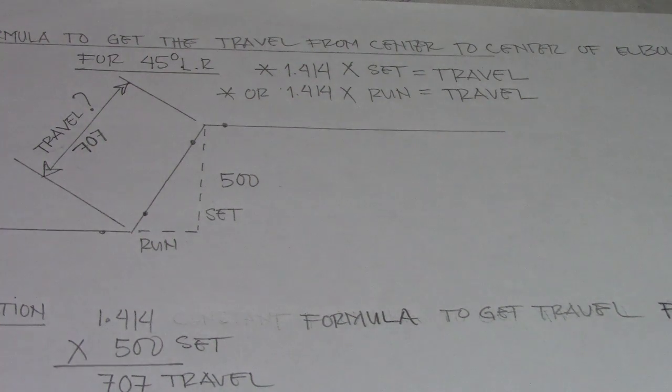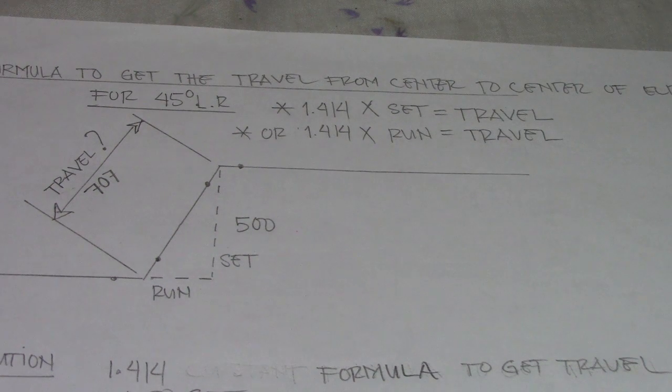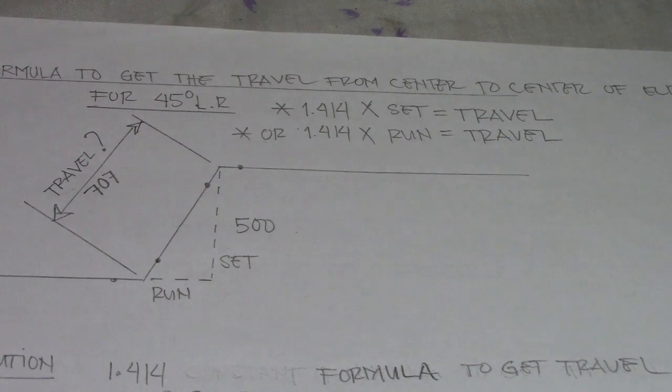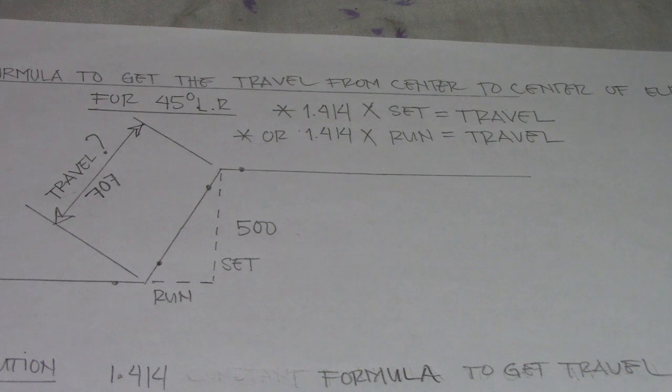For new pipefitters, if you have an interview, this is always used by employers. This is the question mark they give, with some given value like 500. Use 1.414 only for 45 degrees, and do not use it for 90 degrees - only for 45 degrees. When you have a 45 degrees elbow, you can use 1.414.